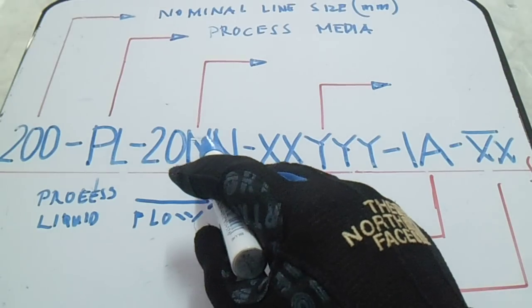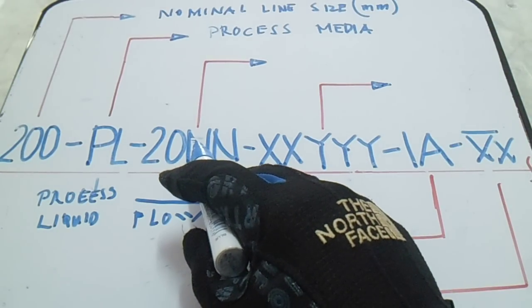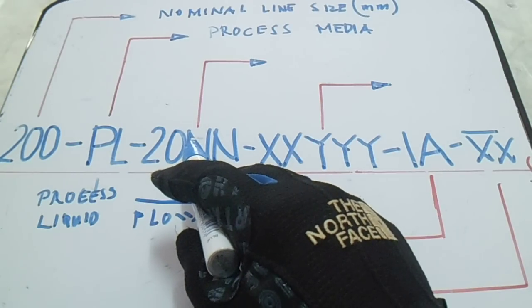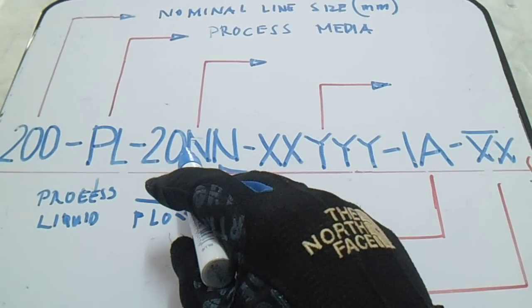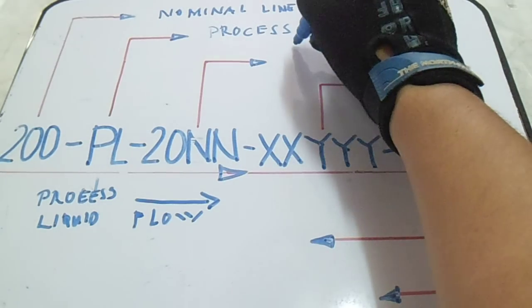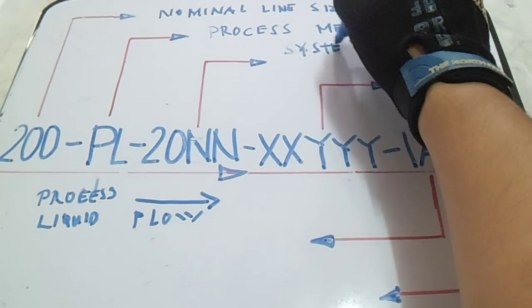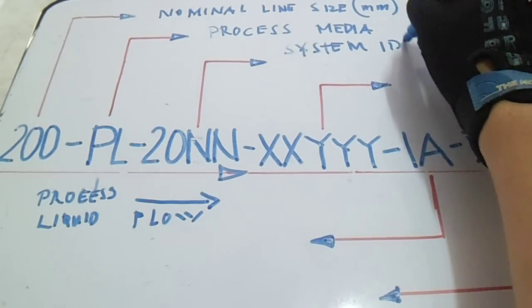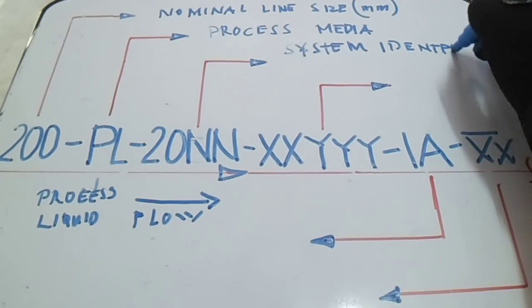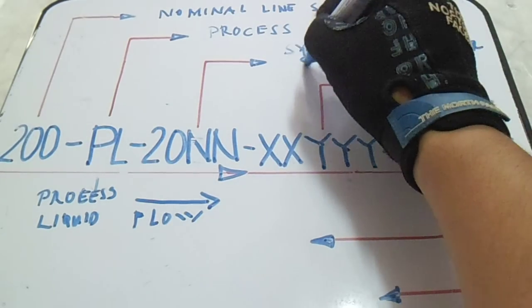Next is 20NN. The meaning of this is we have a system identifier and also a sequence number. So this is the system identifier and a sequence number.